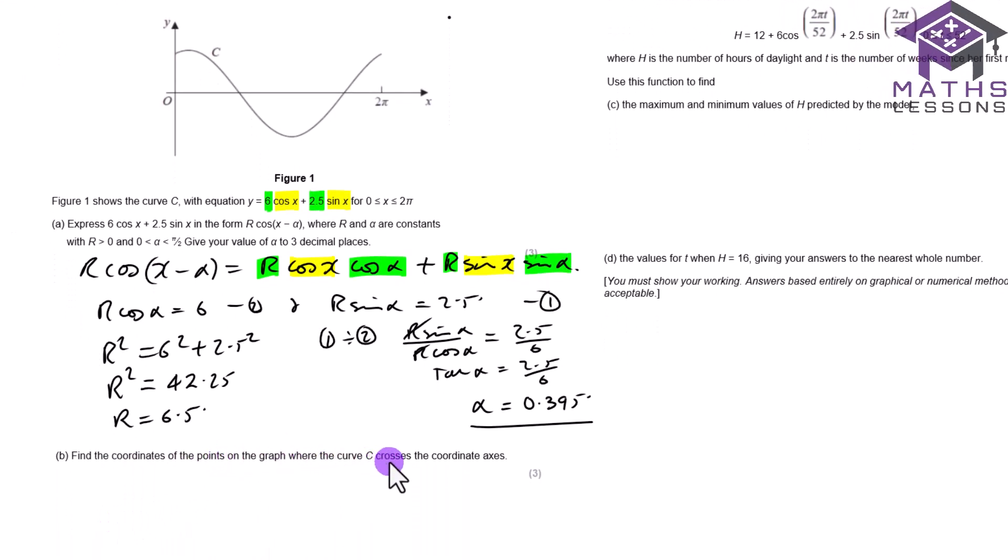Find the coordinates at the points of the graph where the curve crosses the coordinate axes. So what this alpha does is it translates our whole graph to the right by a value of alpha. So therefore this point would normally cross at pi by 2, but this is going to be pi by 2 plus alpha. And this would normally cross at 3 pi by 2, so this is 3 pi by 2 plus alpha as well. And this point here, we just need to make x equal to 0.